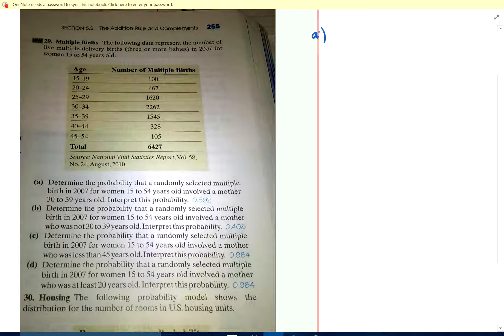Involved a mother 30 to 39. Probability that you're 30 to 39. Well, that'd be 1545 out of 6427.